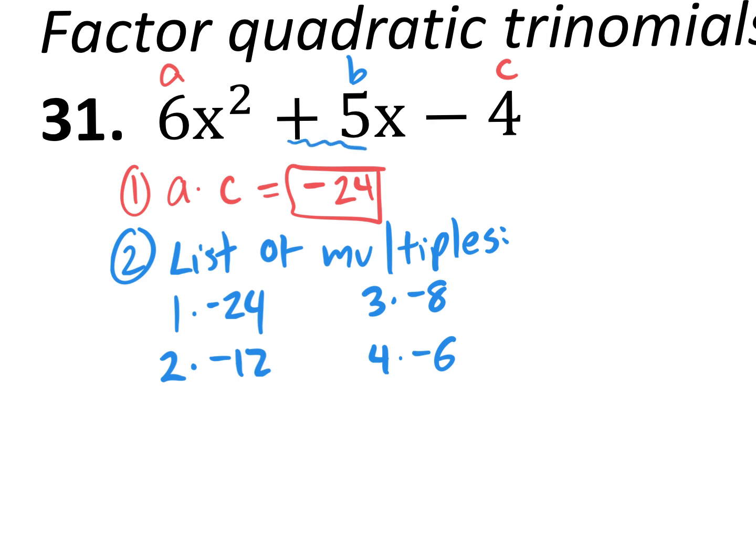So let's add negative 24 plus 1. That would give you negative 23. That's not negative 23, it's positive 5. When you add negative 12 and positive 2, that gives you negative 10. That middle value is not negative 10, it's positive 5. When I add negative 8 plus 3, that's a negative 5. Well, this is not negative 5, but it is a positive 5, which means I have the right number, just the wrong sign, which means these are the right numbers. They just have the wrong signs.